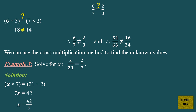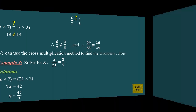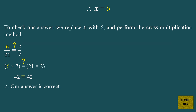And therefore, 54 over 63 doesn't equal 16 over 24. We can also use the cross multiplication method to find unknown values. Example 3. Solve for x: x over 21 equals 2 over 7. Solution. x times 7 equals 21 times 2. 7x equals 42. x equals 42 over 7. Therefore, x equals 6.